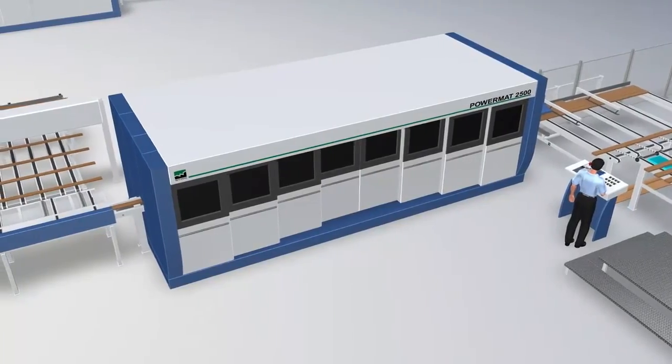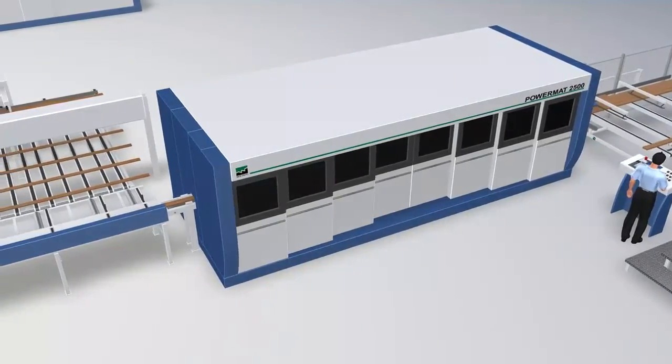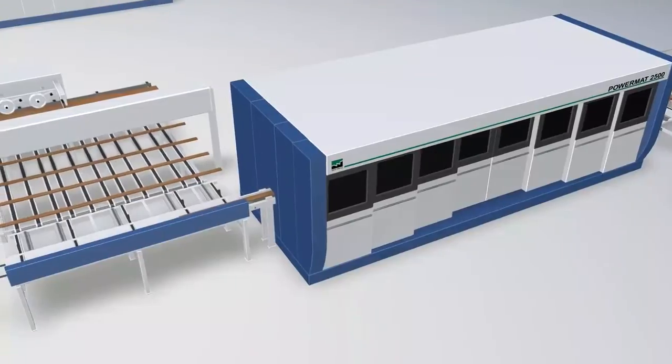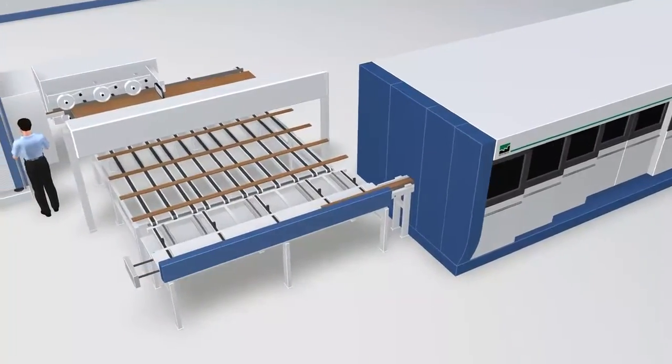Boards of the desired quality are then pre-planed in a Powermat 2500 to perfectly dress the surface for the subsequent scanning process.